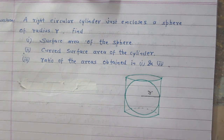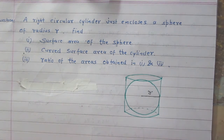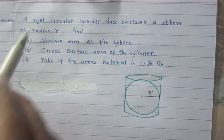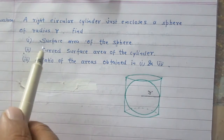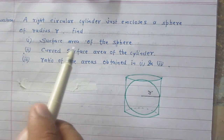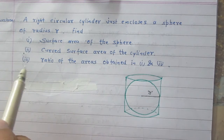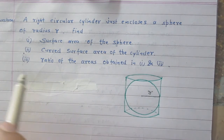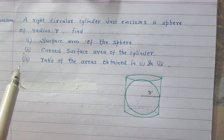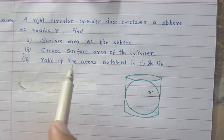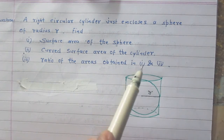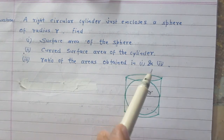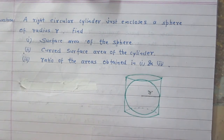A right circular cylinder just encloses a sphere of radius R. Find: 1. Surface area of the sphere, 2. Curved surface area of the cylinder, and 3. Ratio of the areas obtained in part 1 and part 2.